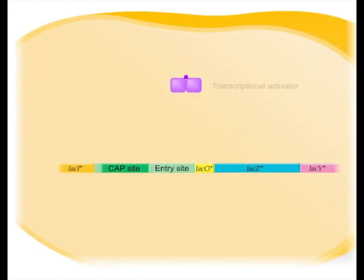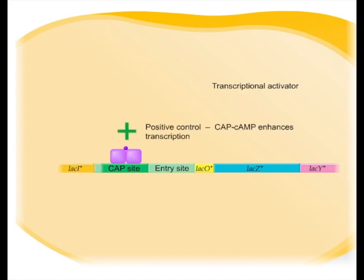The CAP-cyclic AMP complex is said to be a transcriptional activator because the rate of transcription is increased by the complex. In other words, there is positive control of the lac operon by this system in addition to the negative control by the repressor system.